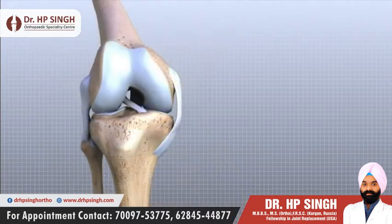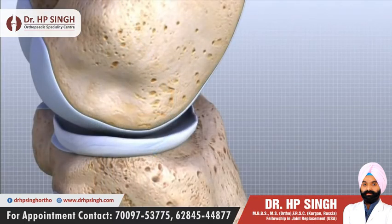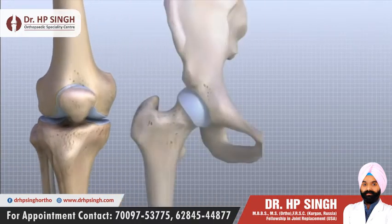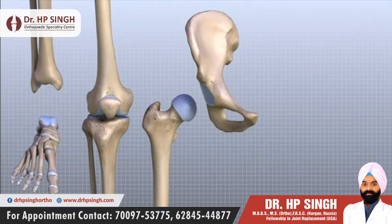Taken all together, the ligaments of the knee are the most important structures that stabilize the joint. Remember, ligaments connect bones to bones. Without strong, tight ligaments to connect the femur to the tibia, the knee joint would be too loose. Unlike other joints in the body, the knee joint lacks a stable bony configuration. The hip joint, for example, is a ball that sits inside a deep socket. The ankle joint has a shape similar to a mortise and tenon, a way of joining wood used by craftsmen for centuries.